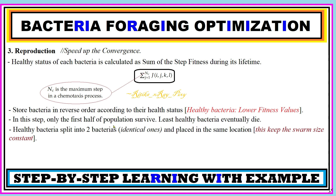Only the first half of the population will survive and the least healthy bacteria will eventually die. To keep the swarm size constant, healthy bacteria split into two identical bacteria placed in the same location. So in the reproduction step, bacteria are arranged by health status: lower fitness value means healthy, higher fitness value means unhealthy. The least healthy bacteria die, and healthy ones split into two identical bacteria.